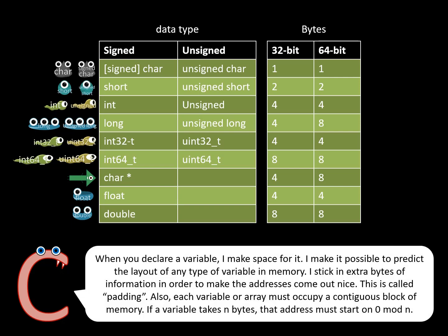When you declare a variable, I make space for it. I make it possible to predict the layout of any type of variable in memory. I stick in extra bytes of information in order to make the address come out nice. This is called padding. Also, each variable or array must occupy a contiguous block of memory. If a variable takes n bytes, that address must start on 0 mod n.